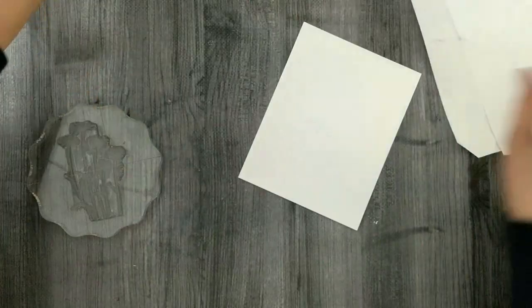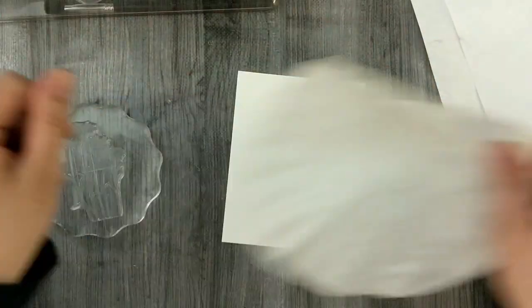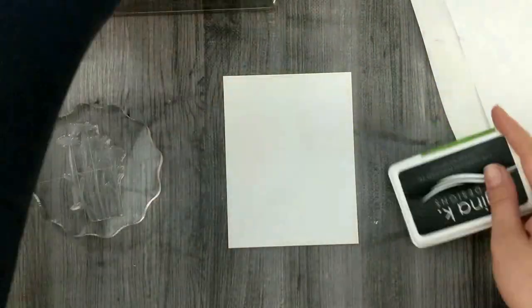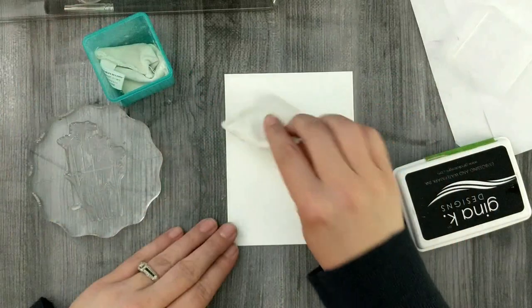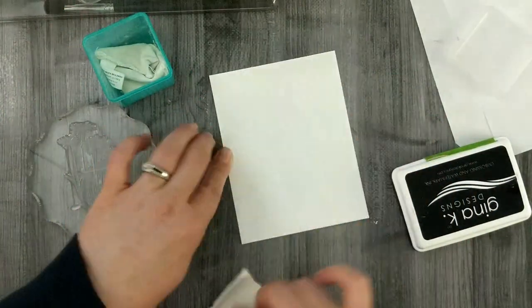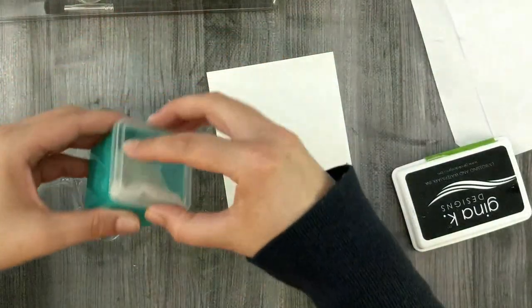I'm going to use my anti-static powder bag and pat it all over my cardstock. Then I've got my Gina K Designs watermark ink and I'm going to ink up my stamp. I'm going to stamp a border all around my cardstock.